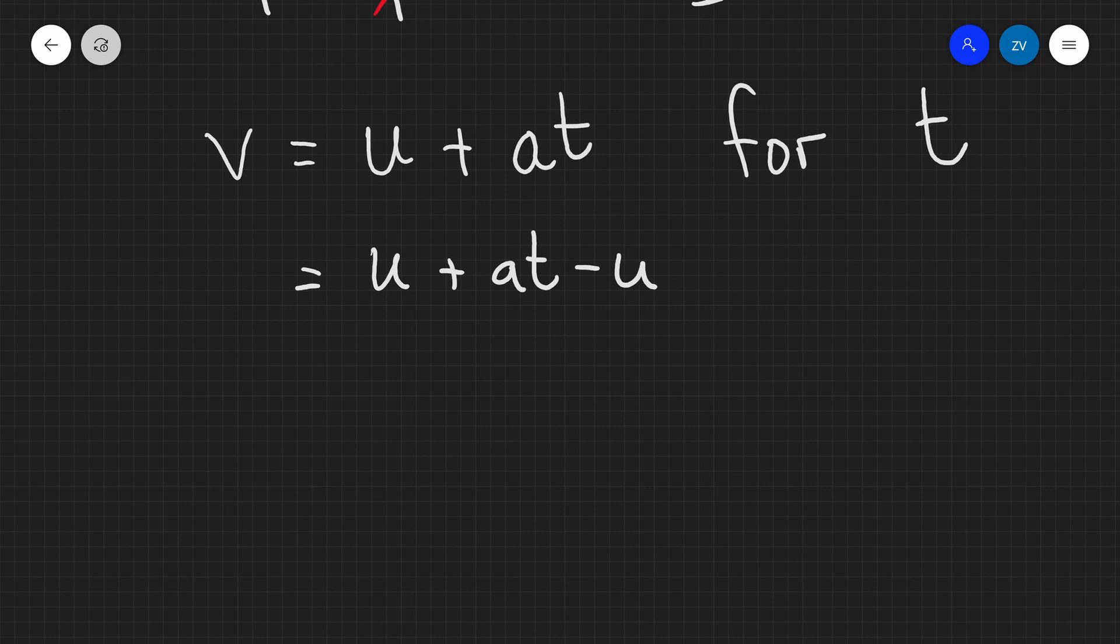And because I have taken away a U from the right-hand side, I need to do exactly the same on the left-hand side. So, I've taken away U on the right-hand side, I'm also taking away a U on the left-hand side. So, I can cancel this out. U and U, they're going to cancel each other out. And what I'm left with is that V minus U is equal to AT.